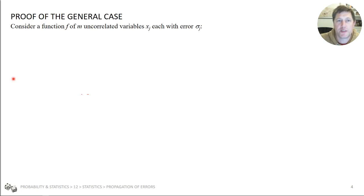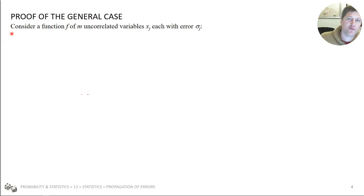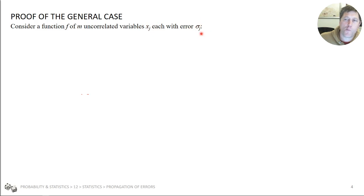That was one specific case where A equals B plus C. Of course there are many functions you might encounter to process your data and calculate what you actually want. So we're going to look at the general case. We have a function F with M uncorrelated variables X_j — uncorrelated means each one is independent from the other. Each variable X_j has its own error sigma_j, and the errors are independent of each other too.